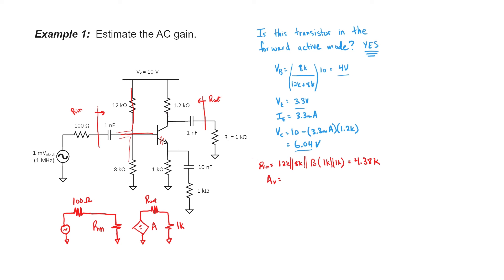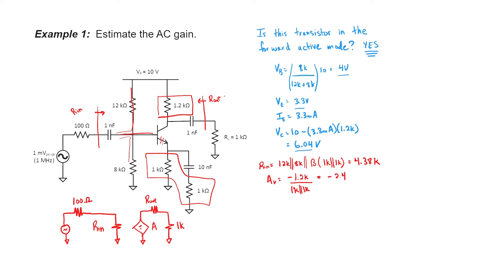The voltage gain here should be the resistance connected to my collector divided by the resistances connected to my emitter. There's a negative sign because it's a common emitter configuration and that's inverting. Down here in the denominator, we just have 1k in parallel with 1k. This works out to negative 2.4. Our output impedance here is just 1.2 kilohms.